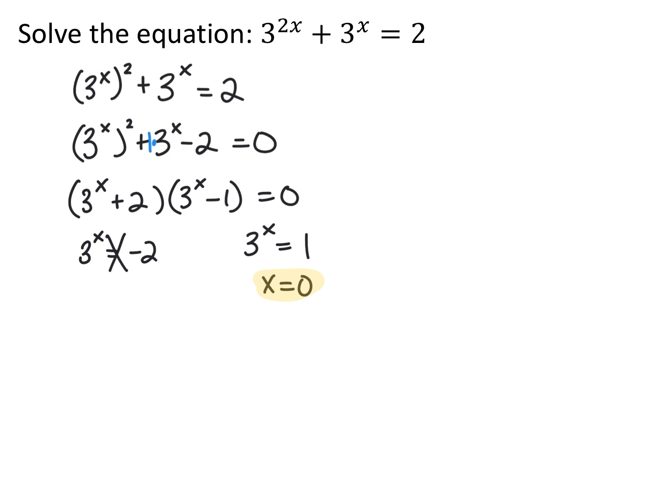x equaling 0 won't always happen — it just occurred in both examples I chose. It could be 3 to the x equals 3, in which case x equals 1. If it's not a nice multiple of the base — for example, if 3 to the x equals 2 — there's no nice integer, so you'd switch into logarithmic form and say x equals log base 3 of 2.